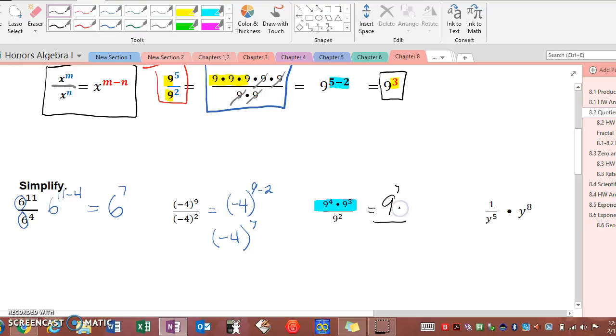If you ever forget your rules, just put everything in expanded form, do your one-to-one cancellation and you'll be able to get the right answer. So we simplified our numerator and now we have to simplify the whole expression, and seven minus two is five.